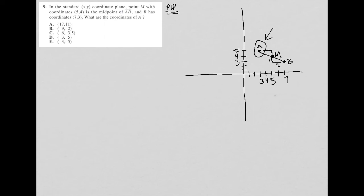Well, yeah, I already found that. So the coordinates of A would be 3, because we have 3, and 5. So 3, 5 are my coordinates, and that is choice D.